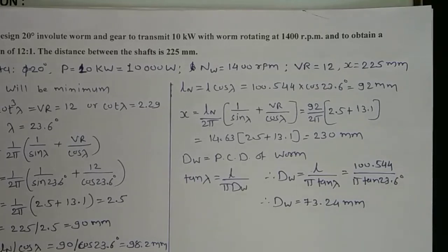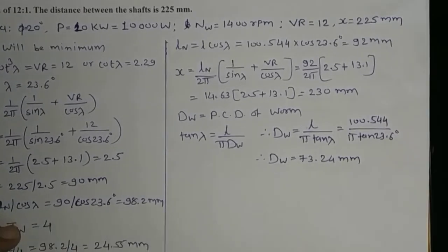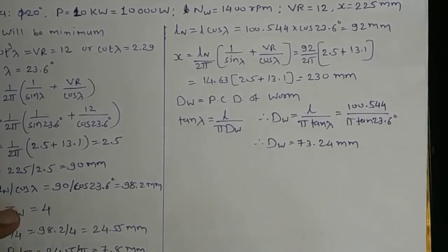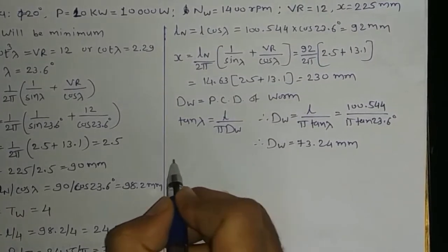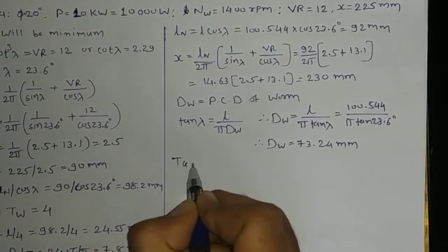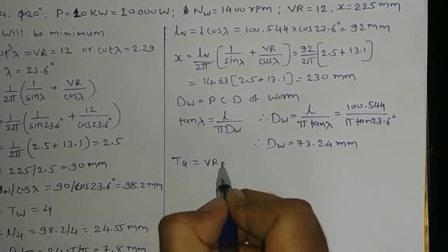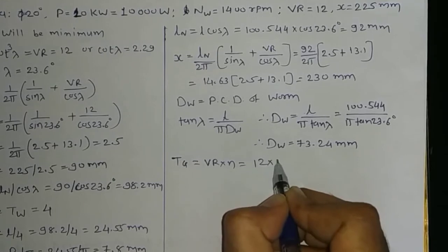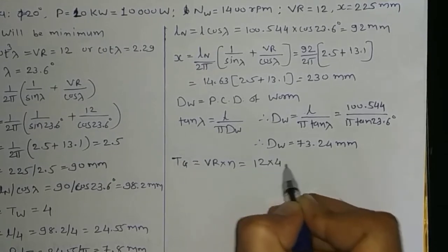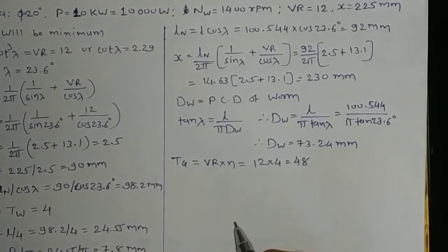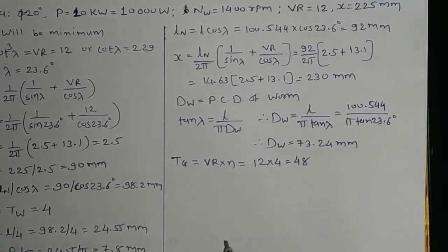The velocity ratio is 12 and the worm has quadruple threads, T_W = 4. Therefore the number of teeth on the worm gear T_G = VR × N = 12 × 4 = 48 teeth.